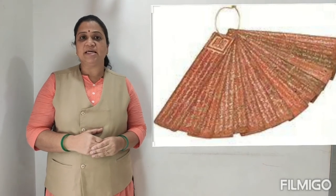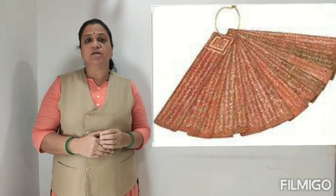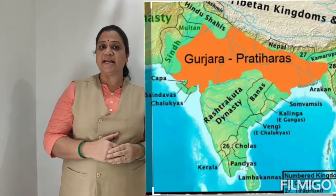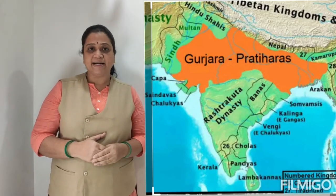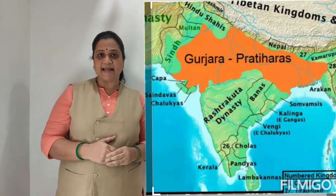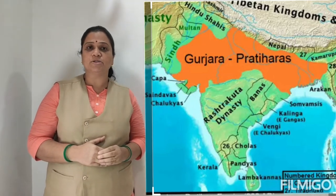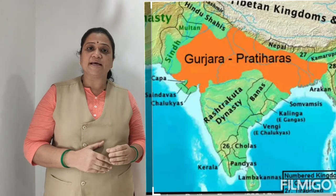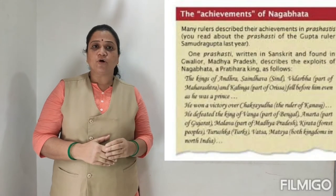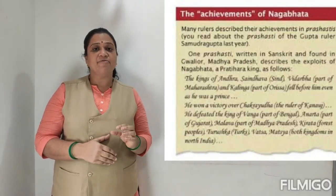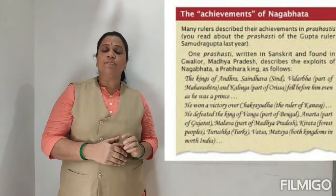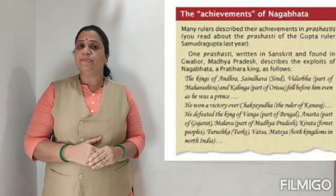One such example of a Prashasti is given in the NCERT textbook. That is the Prashasti about the achievements of Nagavatta. Nagavatta was the king of the Gujara Pratihara dynasty. In the first lecture, on the emergence of new dynasties, we studied about the Gujara Pratihara dynasty. The Gujara Pratiharas were the Brahmins who overthrew their king and established their dynasty, and Nagavatta was the person who established this dynasty. The textbook describes in detail what a great warrior Nagavatta was. This Prashasti was found in Madhya Pradesh, near Gwalior.